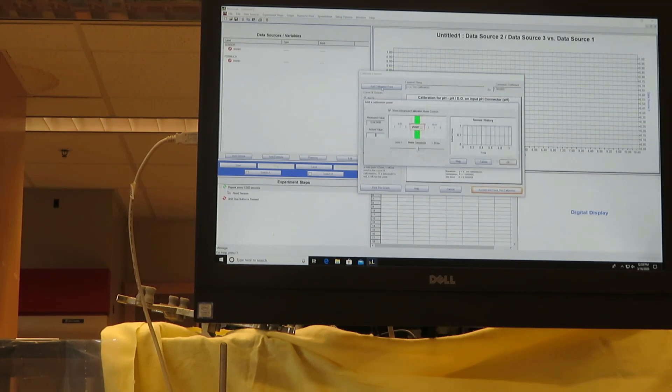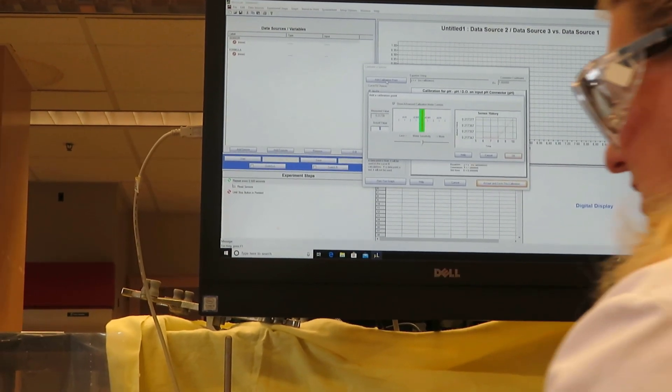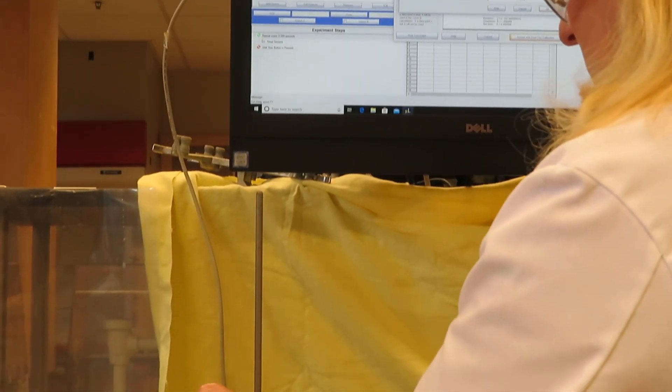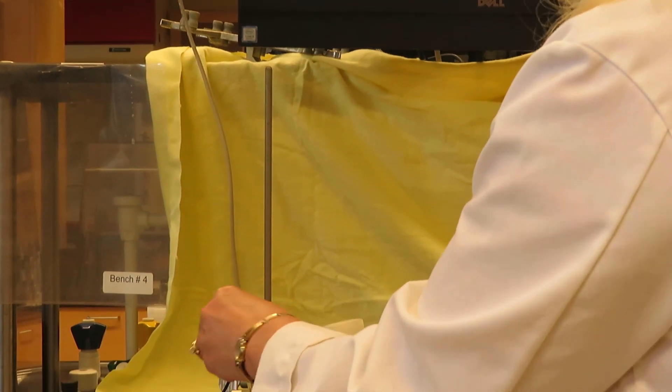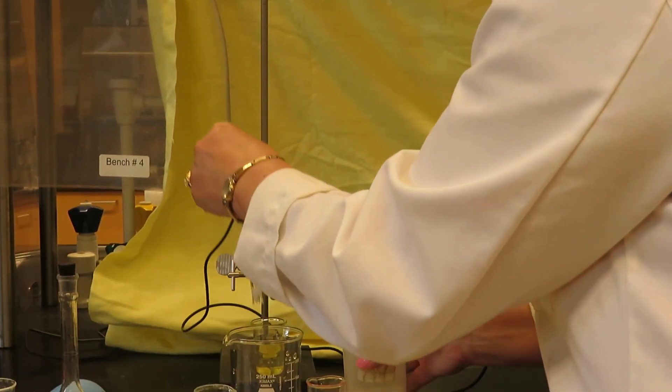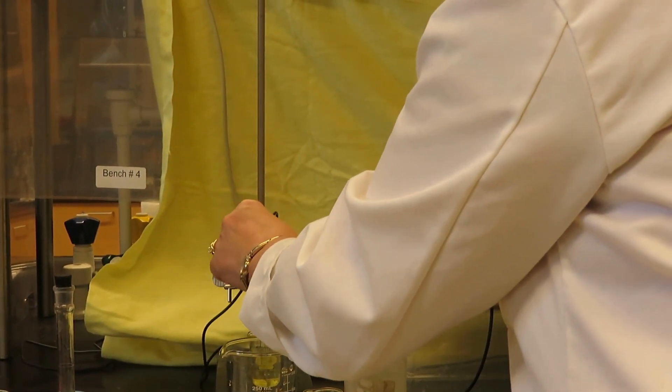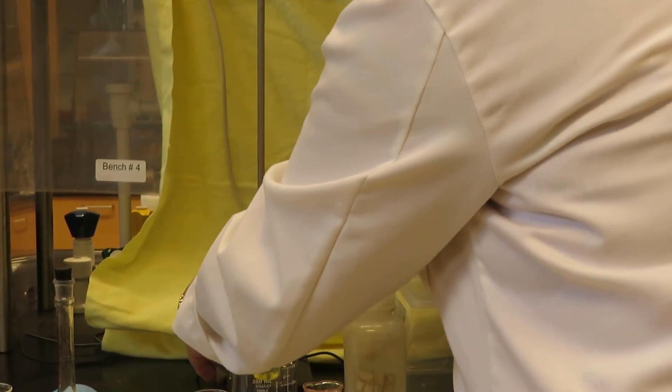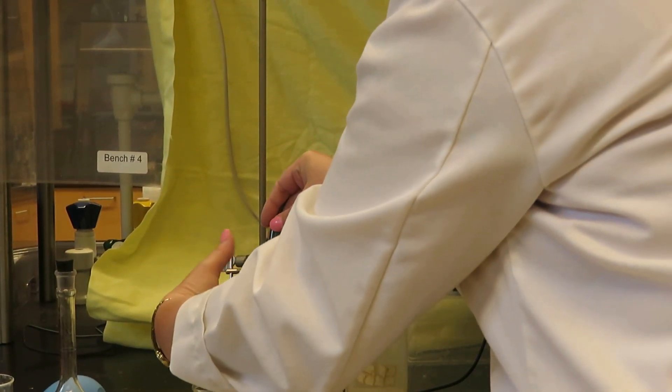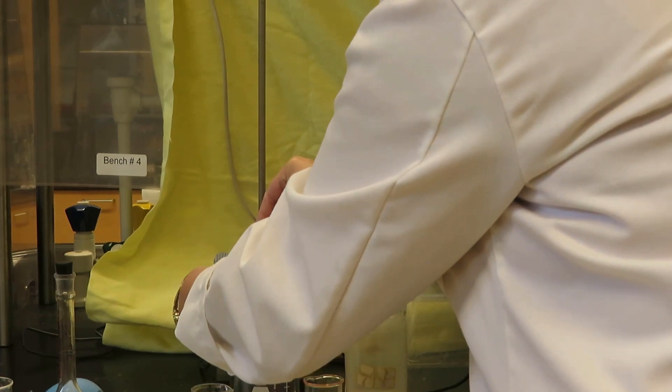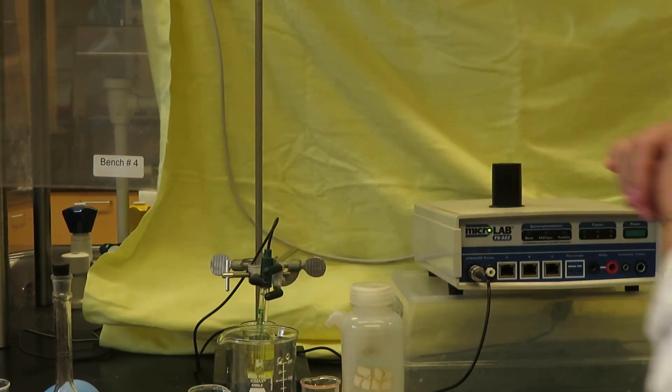Now I will add my next calibration point. I'm going to take this out of the pH 4 buffer, give it a rinse and a shake, and now put it in this yellow pH 7 buffer. I hope you can see that from the camera.